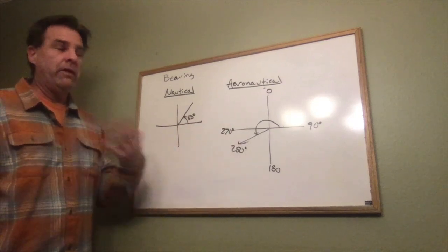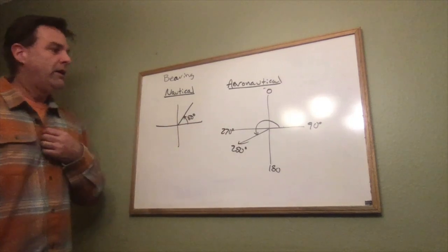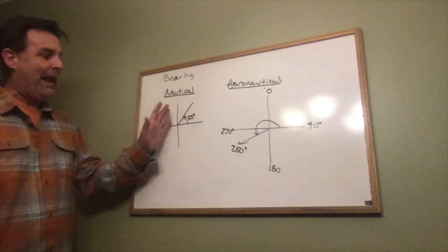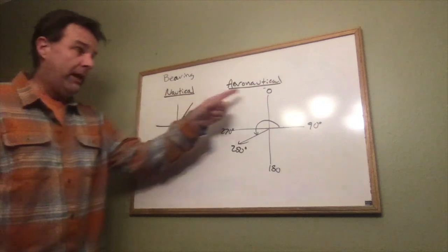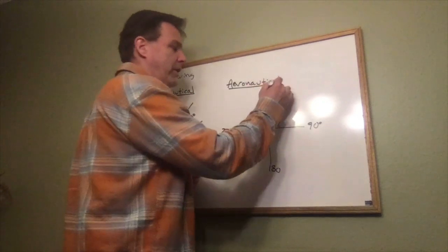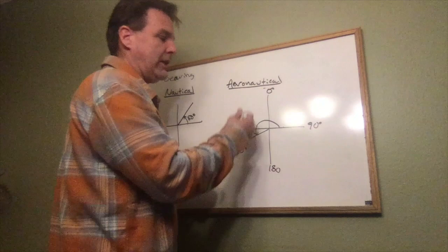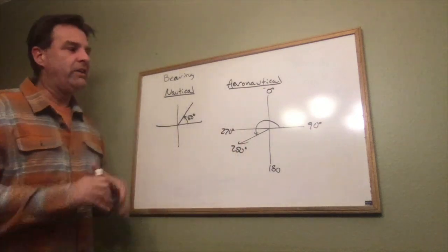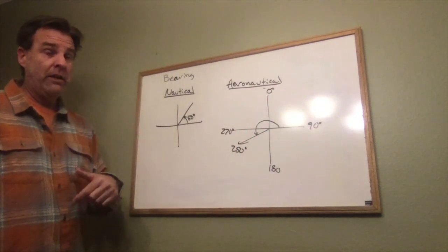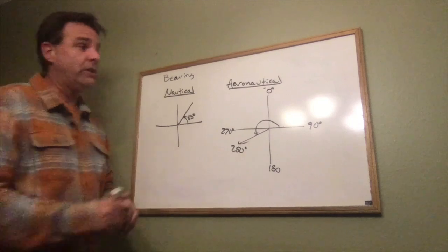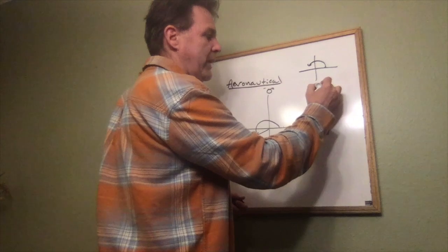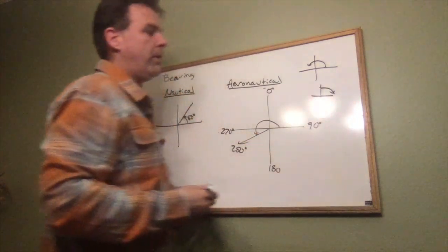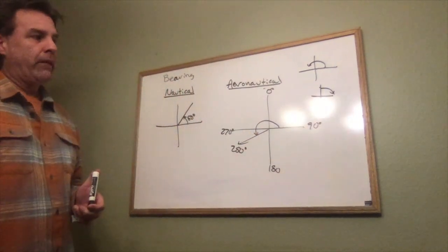So they're similar in that they both use angles but very different in the way that you describe it. Again, nautical: you use north-south, angle from the north-south, going east or west. For the aeronautical, we just start up here at zero and go in a clockwise direction. Now, the aeronautical is easy to confuse with our standard position, so we have to remember: standard position's direction is this way as positive, but aeronautical starts up here and goes this way.